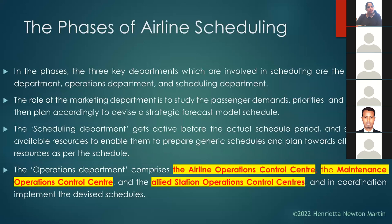In the phases of airline scheduling, three key departments are involved: the marketing department, which studies public demand; the operations department, which strategically devises and plans; and the scheduling department, which manages the flights. These three departments coordinate together for the purpose of airline scheduling.